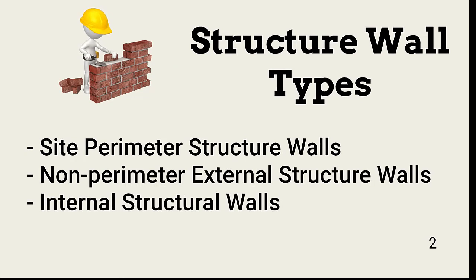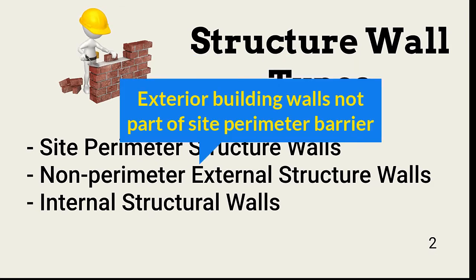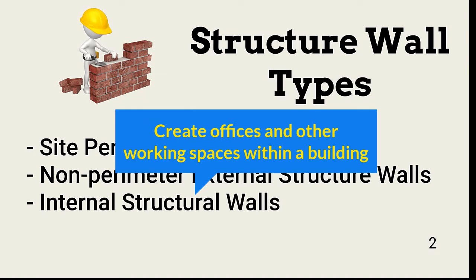I've separated structural walls into three types. Structural site perimeter walls are walls that are both part of a structure and form part of a site barrier. Non-perimeter external walls are the outside walls of a building entirely within and apart from the perimeter barrier. Internal walls create offices, wiring closets, data centers, and other security zones.